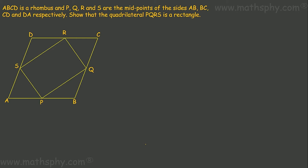Now, what this question says here is: ABCD is a rhombus, and PQRS are the midpoints of the sides AB, BC, CD, and DA. P is the midpoint of AB, Q for BC, R for CD, and S for AD. Show that quadrilateral PQRS is a rectangle.